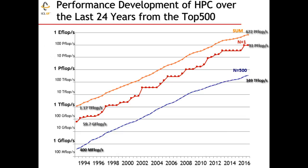Looking at the Top500 data, the orange line represents the sum of the 500 computers — today that number is 672 petaflops for the sum. The red line represents the computer at position number one, the fastest computer, which today achieves 93 petaflops. The blue curve at the bottom shows position number 500, currently at 349 teraflops — 349 times 10 to the 12 floating-point operations per second.